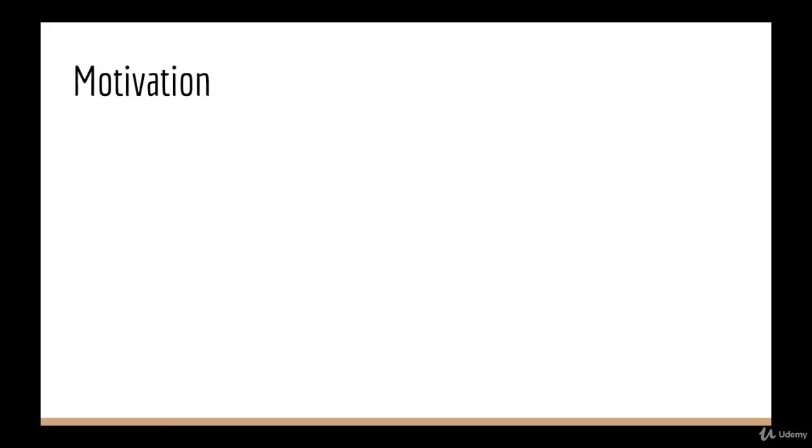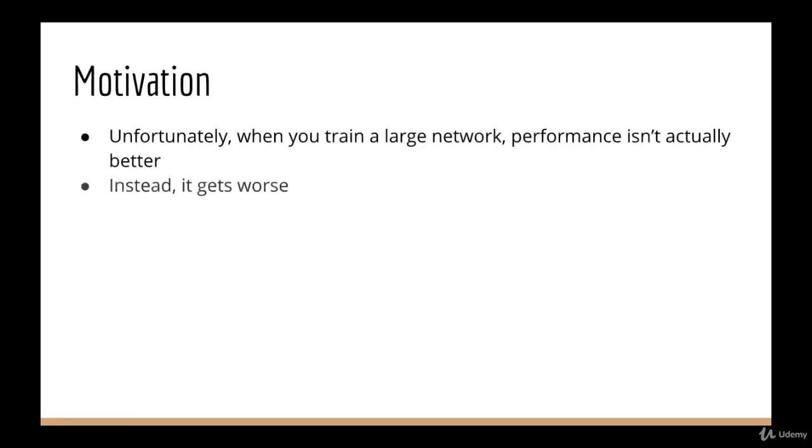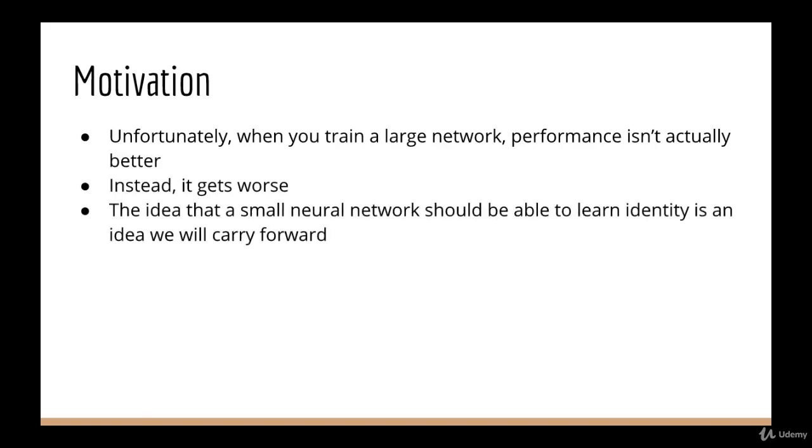The problem arises when you actually try to train these networks. While theoretically, if you add on an identity network to a very good network, you get the equivalent of a very good network. In reality, you have to train all the neural network weights simultaneously. And so this approach just doesn't work in practice. The idea that a small neural network should be able to learn the identity function in theory is the most important fact to keep in mind.